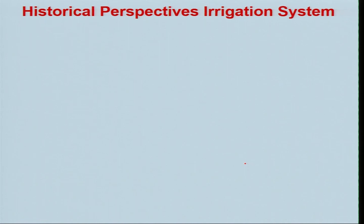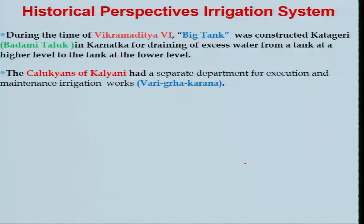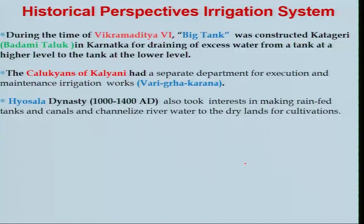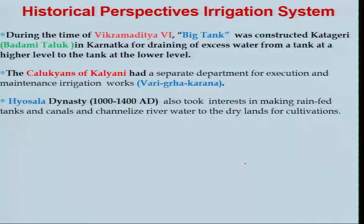This clearly indicates a governance system for water bodies in southern India — not only construction but ongoing management and control. During the time of Vikramaditya VI, a big tank was constructed in Badami Taluk, Karnataka, for draining excess water from a higher-level tank to a lower one. The Chalukyas of Kalyani had a separate department for execution and maintenance of irrigation works. The Hoysala dynasty from around 1000 to 1400 AD also made rain-fed tanks and canals to channelize river water to dry lands. Ganapati Deva of the Kakatiya dynasty constructed several irrigation works consisting of 100 tanks, as per the Warangal inscriptions.